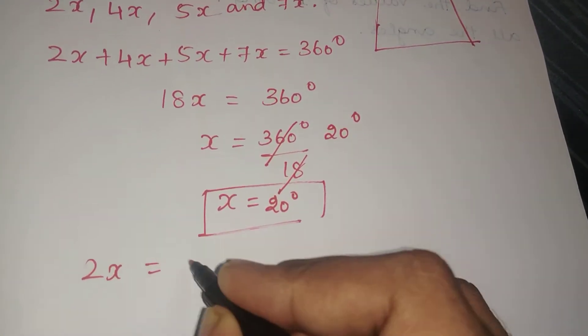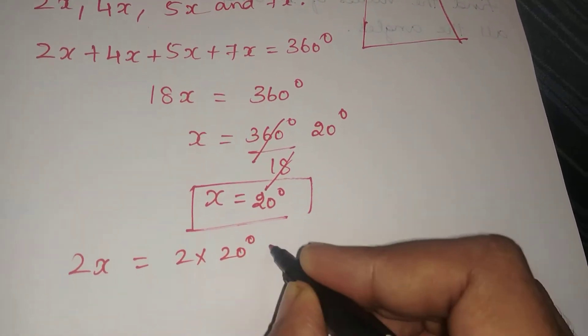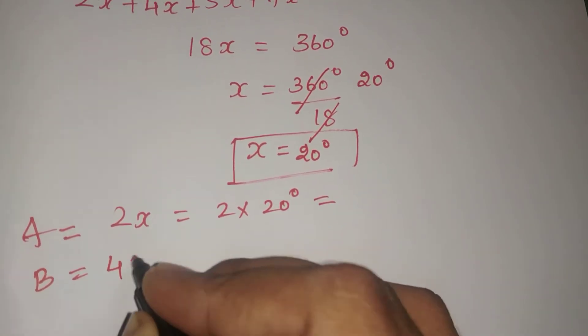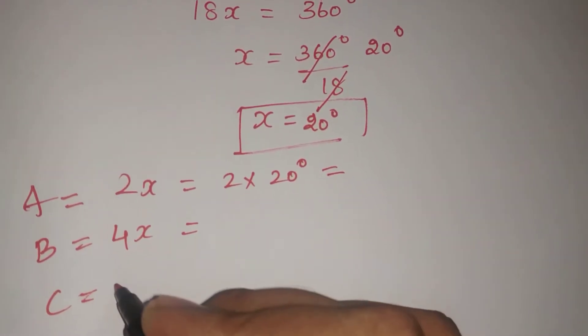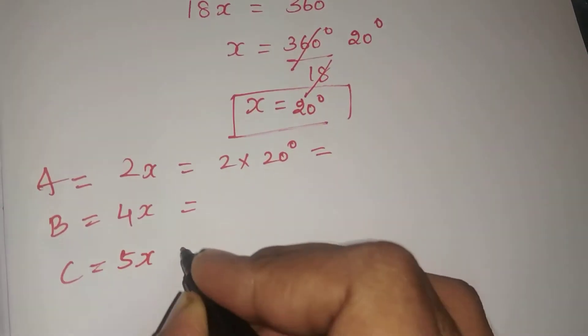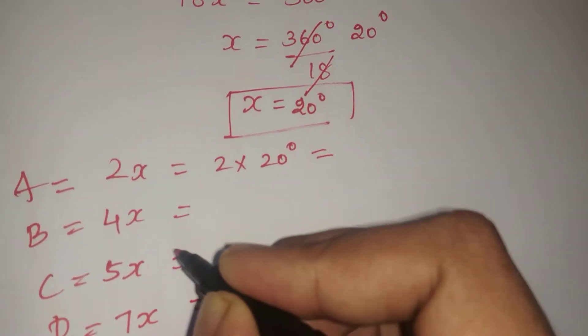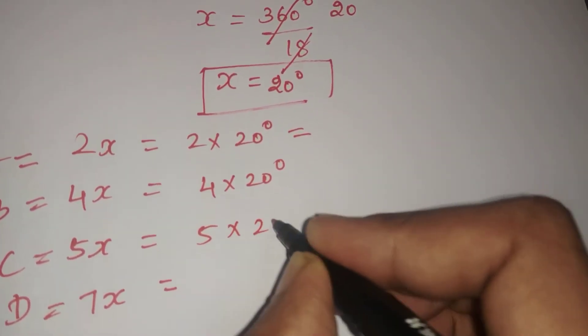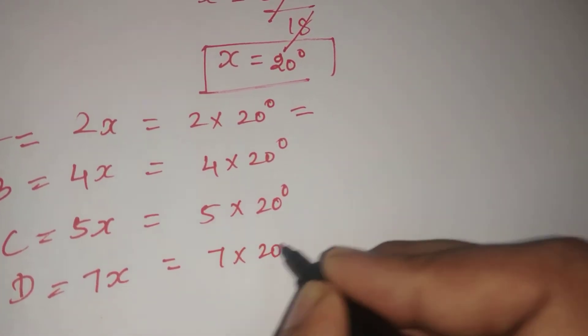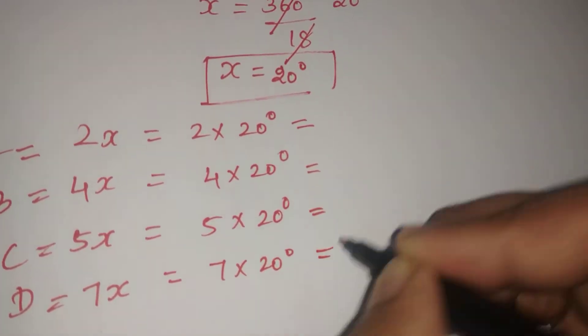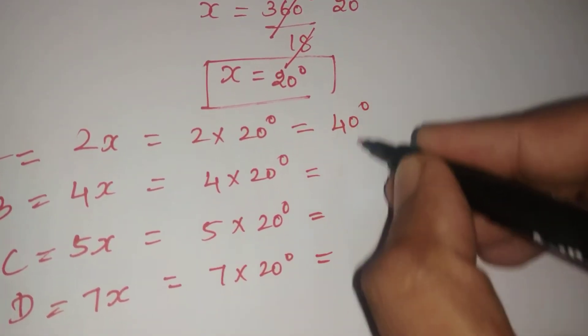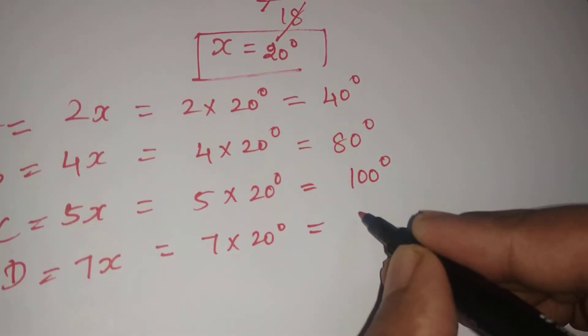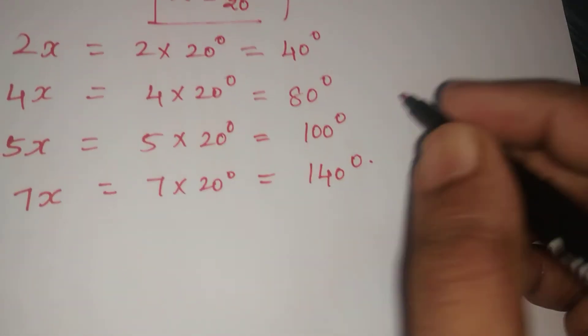So 2X equals 2 times 20 degrees equals 40 degrees. 4X equals 4 times 20 degrees equals 80 degrees. 5X equals 5 times 20 degrees equals 100 degrees. 7X equals 7 times 20 degrees equals 140 degrees.